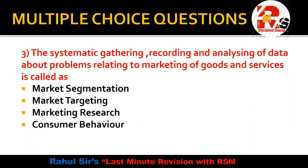Question number 3: The systematic gathering, recording, and analyzing of data about problems relating to the marketing of goods and services is called — market segmentation, market targeting, marketing research, or consumer behavior? Here we are dealing with gathering data, recording data, and systematically analyzing data for solving problems which relate to the organization. The correct concept is called marketing research.